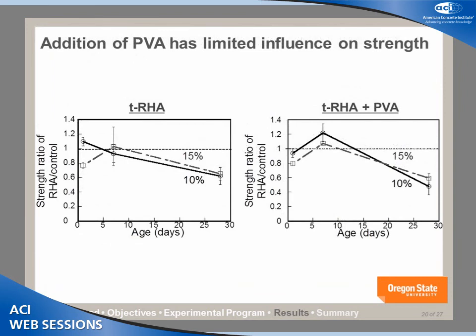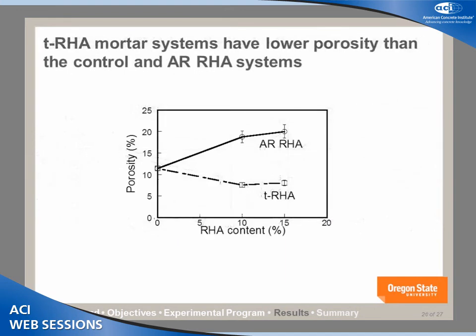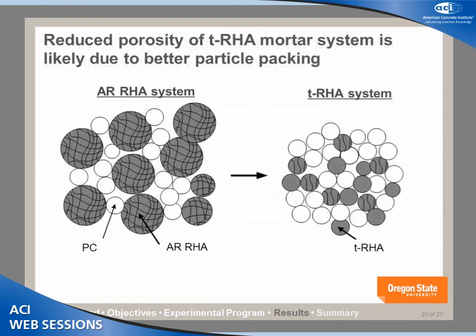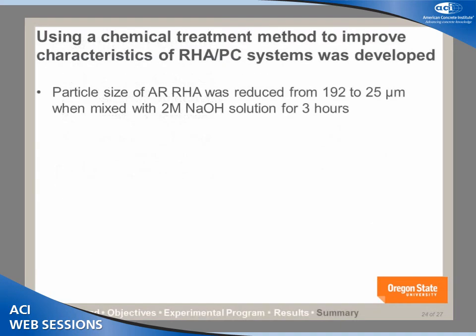The addition of PVA has limited influence on setting time. For porosity, AR-RHA increased porosity while T-RHA reduced it. This happens because in the AR-RHA system, we have larger particles of about 192 microns, while Portland cement particles are about 10 to 15 microns — the large size mismatch leads to poor particle packing. For T-RHA, the particle size is about 25 microns, much closer to the Portland cement particle size of 10 to 15 microns, resulting in better particle packing and lower porosity.